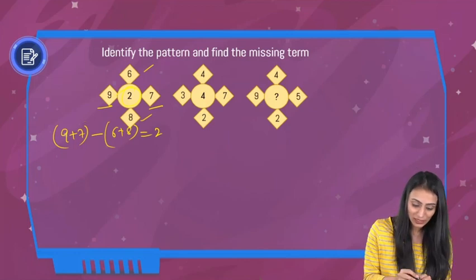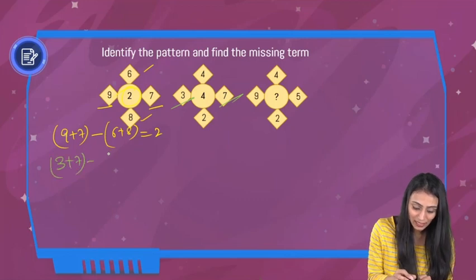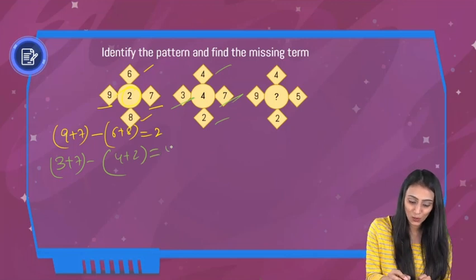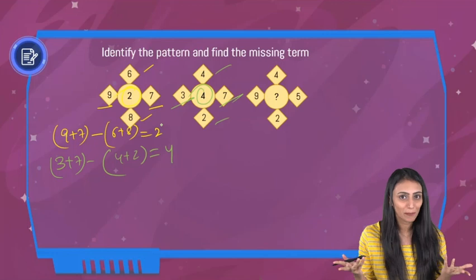Similarly, take a look at this number. We have 3 and 7. So 3 plus 7, if I subtract the sum of 4 and 2 from here, what do I get? 10 minus 6, that's going to be 4, and we have 4 here. So that means we have understood the pattern, right?